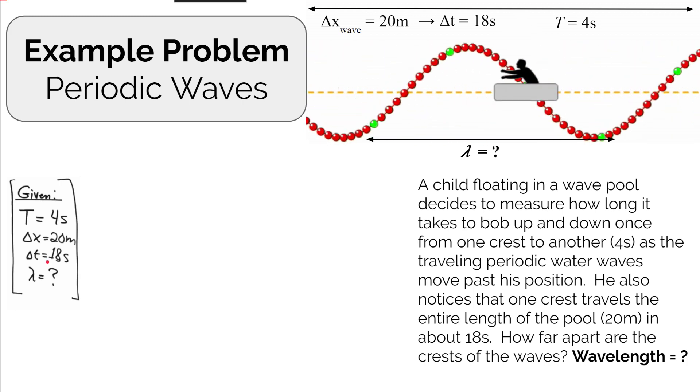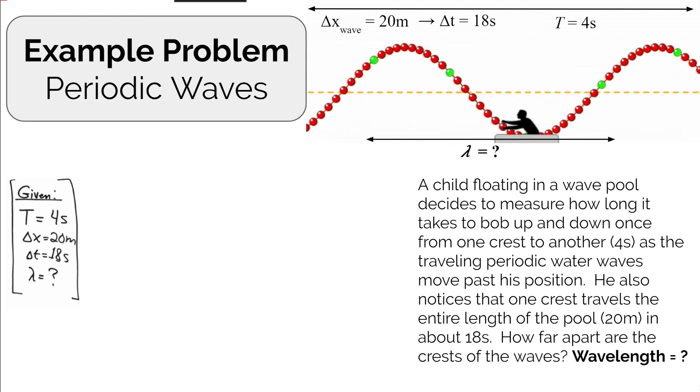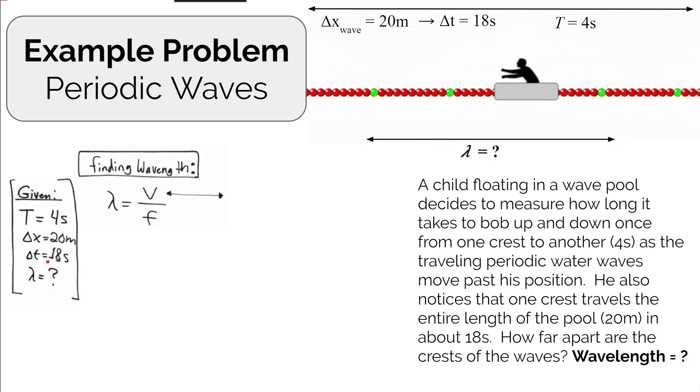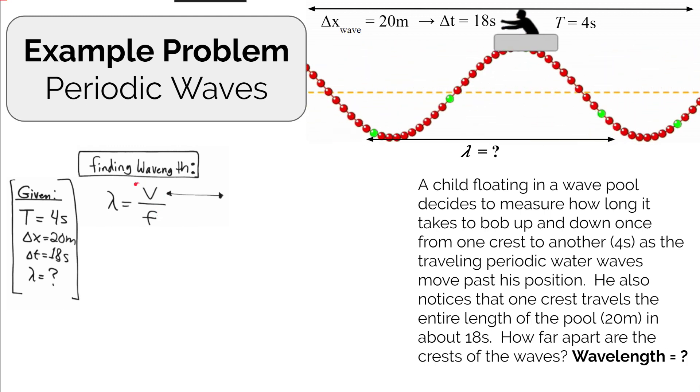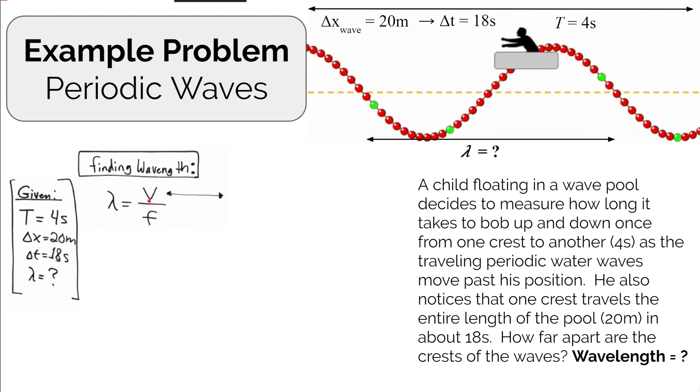We have an equation which allows us to calculate the wavelength of any periodic wave. Wavelength is equal to the wave speed divided by the frequency. Let's first figure out how fast the waves are moving through the water.